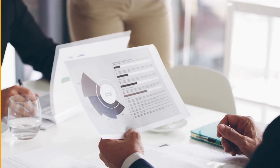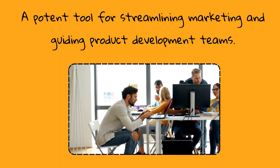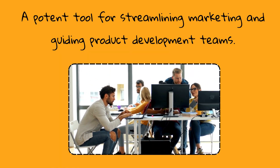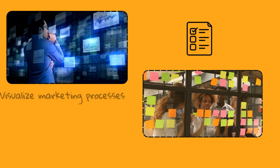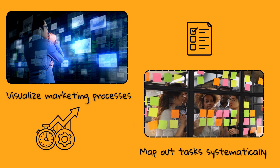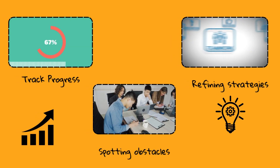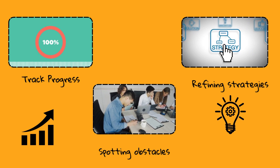It is a powerful tool that helps streamline the marketing processes for the marketing team while also simultaneously guiding the product development team. This template provides a structured framework for visualizing marketing processes, mapping out tasks, and assigning ownership to ensure accountability and efficiency. By utilizing the Agile Marketing Flow Template, teams can easily track progress, identify roadblocks, and adjust their strategies to achieve success.